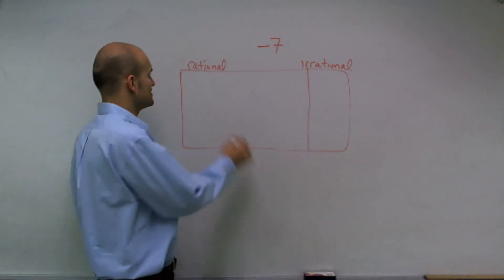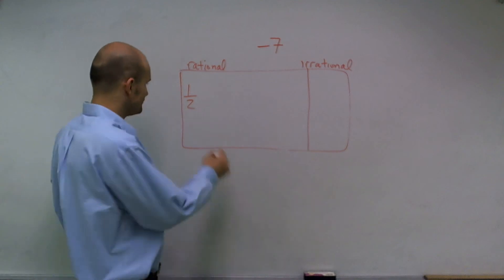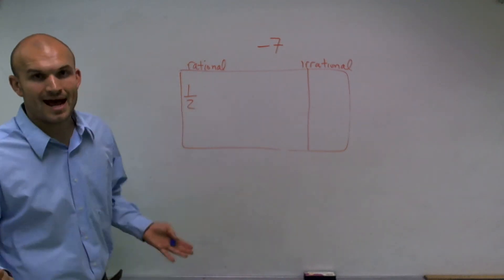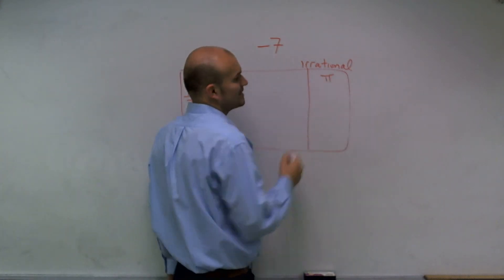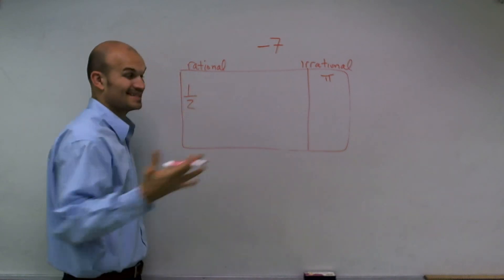So the main important thing about rational numbers is anything that you can rewrite as a fraction. So here's a rational number, 1 half. I can write it as a fraction. Irrational numbers are numbers that we cannot really write down the exact value on that sheet of paper. 1 half is the exact value.